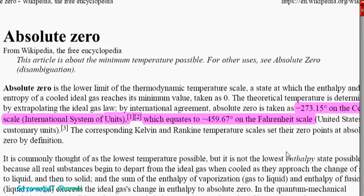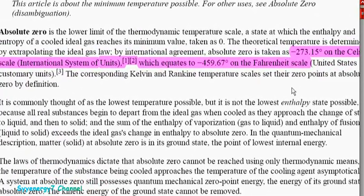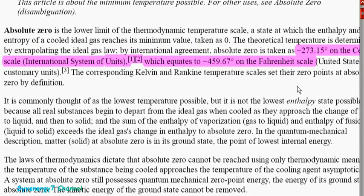Let's first go over the different types of zeros on the scale. You've got absolute zero, which is where there's absolutely no heat. On Celsius it's 273 degrees below zero; on a Fahrenheit scale it's about 460. That means the total absence of heat. Zero on Celsius has to do with the freezing point of water, as you know. But where does the zero come from with Fahrenheit?